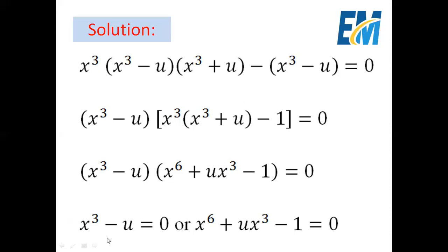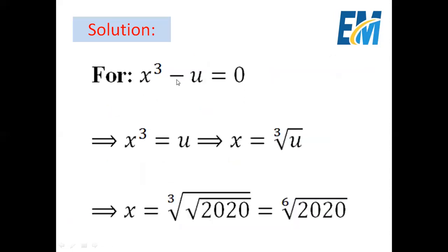We begin with the first equation: x cubed minus u equals 0, so x cubed equals u. Then x equals the cubic root of u. But u is the square root of 2020, so we have a cubic root and a square root — combining roots of order 3 and 2 gives order 6. Therefore x equals the sixth root of 2020.